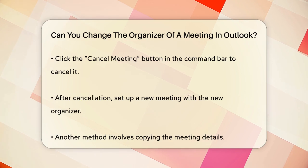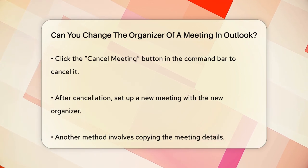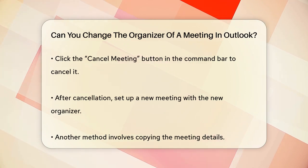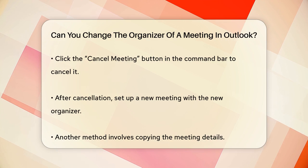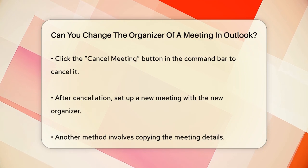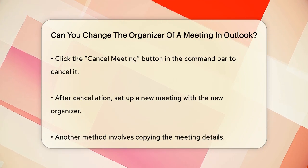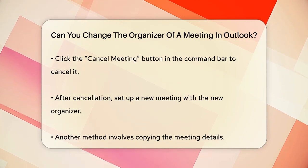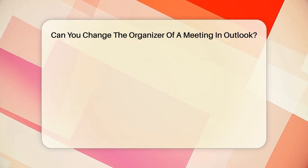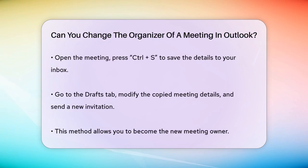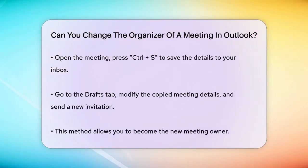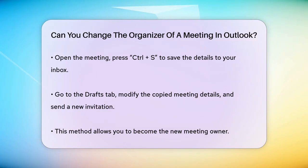Another way is to replicate the details of the already scheduled event. Open the meeting in Outlook, press Control-S to copy the meeting details into your inbox. Go to the Drafts tab, open the copied meeting, and modify the details as needed, then send the new meeting request to the attendees.